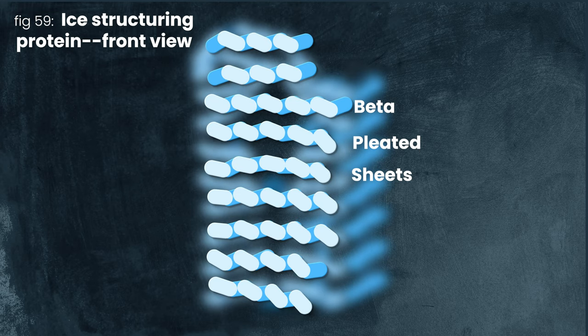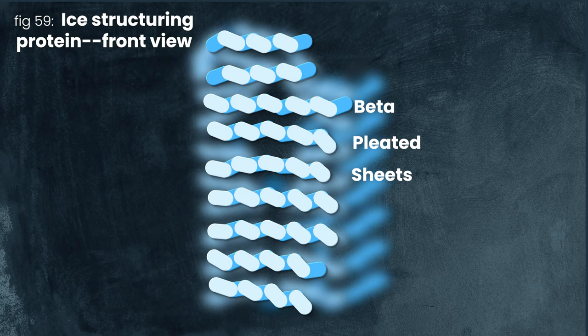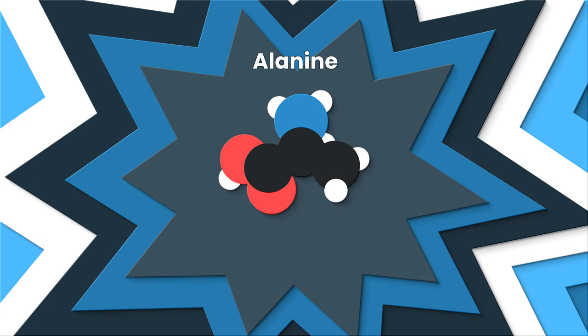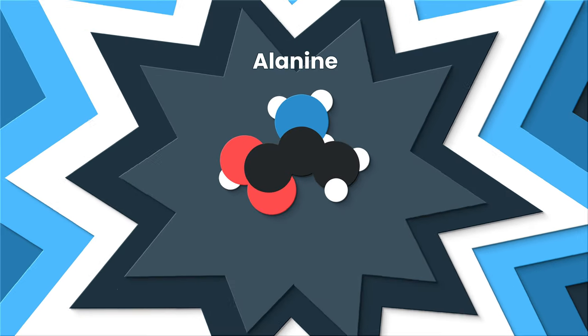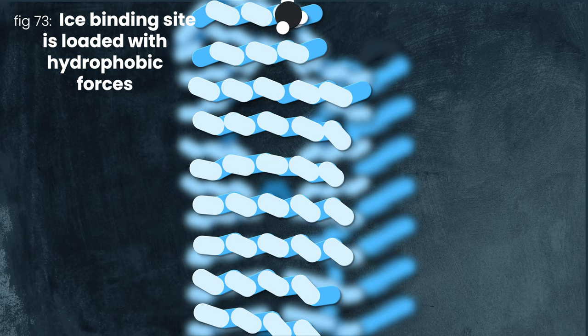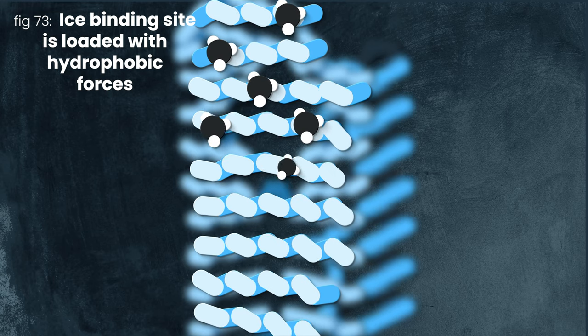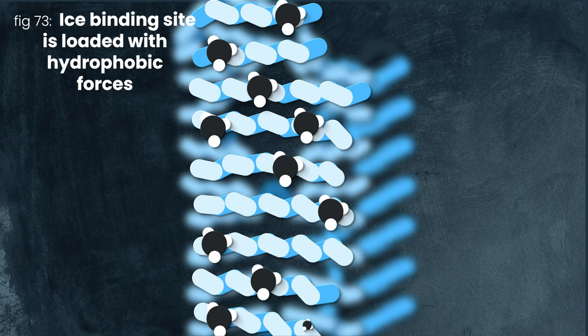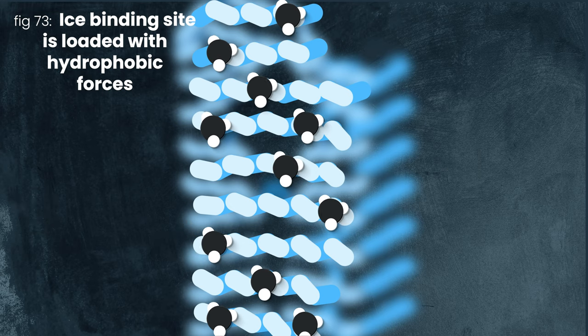The ice binding site is primarily made up of a secondary structure called beta-pleated sheets, which are great in proteins for a lot of more geometric structures. They can make little barrels and lots of other stuff. Here, they flatten out the side that actually will touch ice. But what's that flatness going to do to stop ice? Well, here's where it gets weirder. It's not just the flatness, it's what these flat sheets are made of.